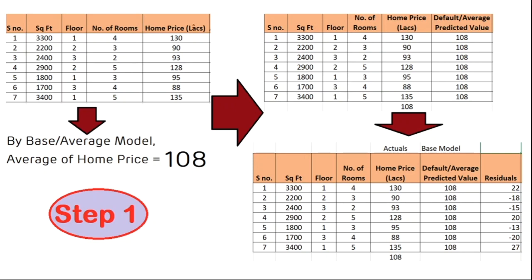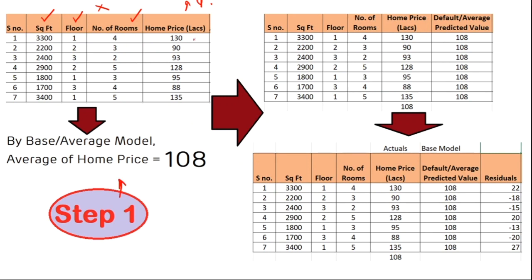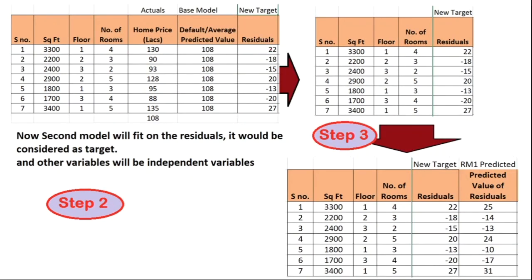Now I'll explain gradient boosting with a small dataset. This is a dataset of home prices with features like number of rooms, floor, and size in square feet. These three variables are X and home price is Y. According to step 1, we calculate the average of the dependent variable, which comes out to approximately 108.